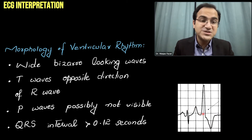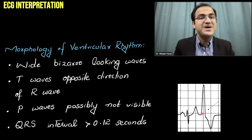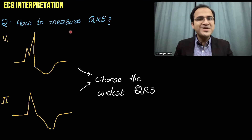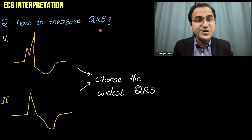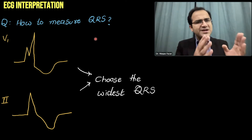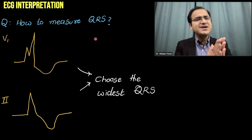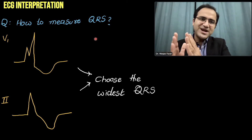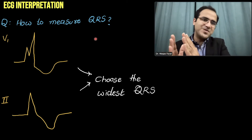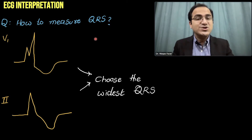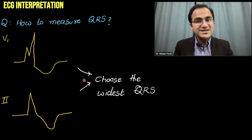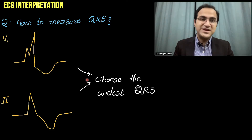How do you measure the QRS complex in wide bizarre ventricular rhythms? One lead might show a more wide QRS complex and another lead might show a less wide QRS complex. In interpretation, you always choose the widest QRS complex and label that as the QRS complex size.